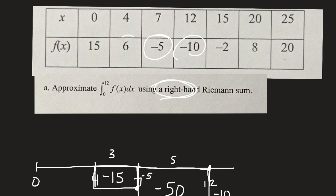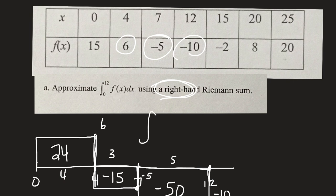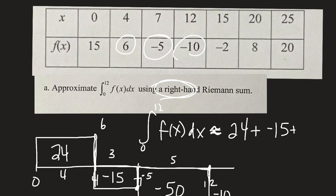At x = 4, the y-value is 6, which is above the x-axis. We draw that rectangle from x = 0 to x = 4 with height 6 and width 4, giving an area of 24 square units. The integral from 0 to 12 is approximately 24 + (negative 15) + (negative 50), which equals approximately negative 41.